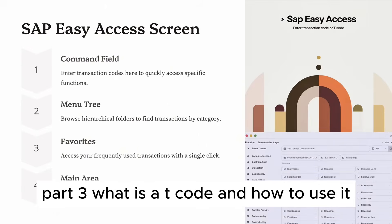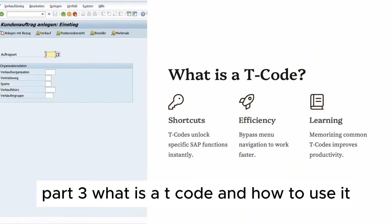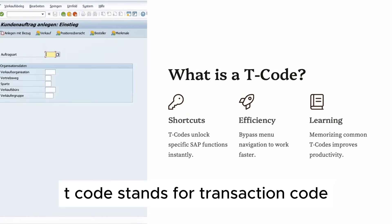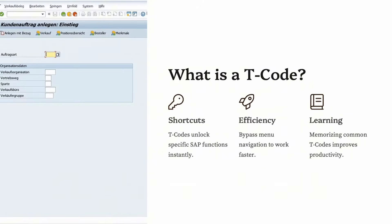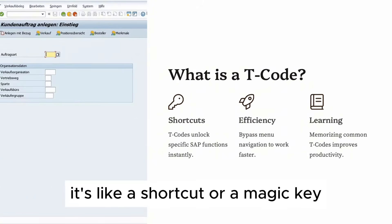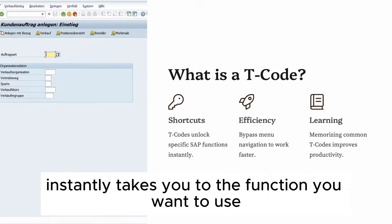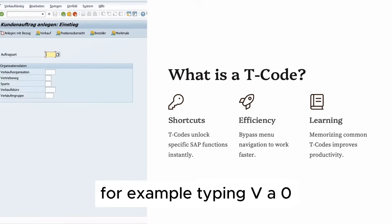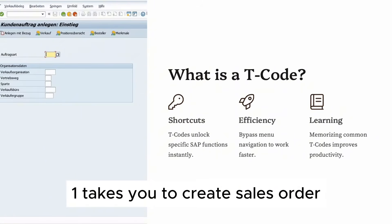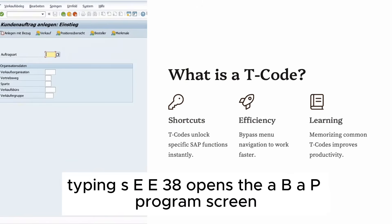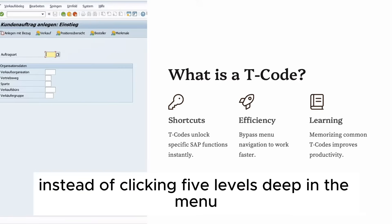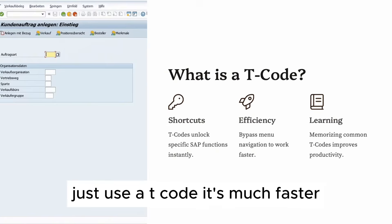Part 3: What is a T-code and how to use it? T-code stands for transaction code. It's like a shortcut or a magic key that instantly takes you to the function you want to use. For example, typing VA01 takes you to Create Sales Order. Typing SE38 opens the ABAP program screen. Instead of clicking five levels deep in the menu, just use a T-code — it's much faster.